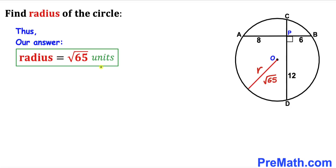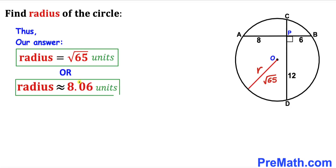So the radius of this circle turns out to be √65 units, which is approximately equal to 8.06 units. Thanks for watching and please don't forget to subscribe to my channel for more exciting videos. Bye.